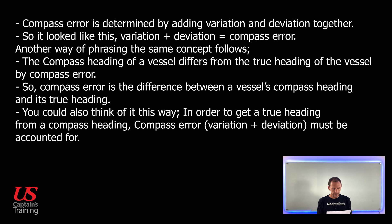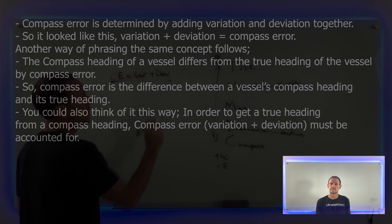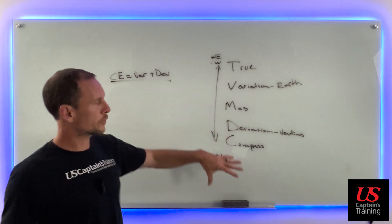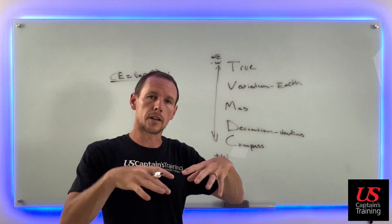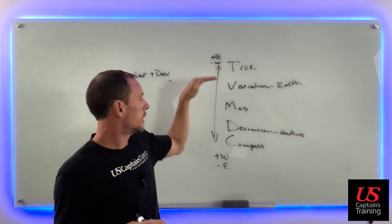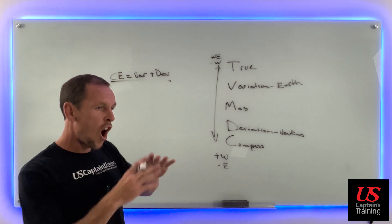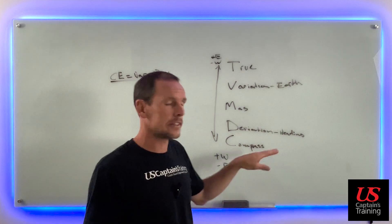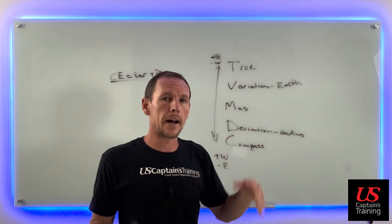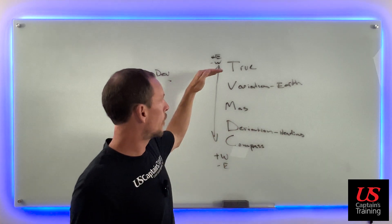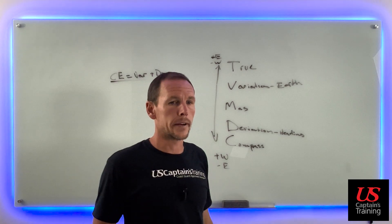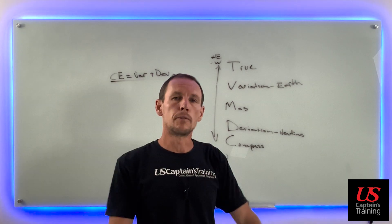You could also think of it this way: in order to get true heading from a compass heading, compass error — or variation plus deviation — must be accounted for. That's what's going on with compass error. This is just a brief lecture to bring us into our compass section. We're going to work with TVMDC — True Virgins Make Dull Company, Add Whiskey, Subtract Ethics — a ton. You're going to have this down. You won't even need the mnemonic rhyme anymore because you'll know TVMDC. See you on the next one.